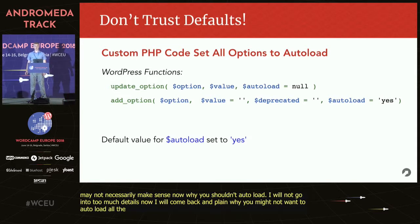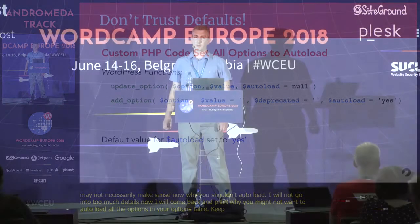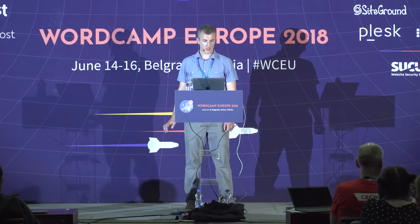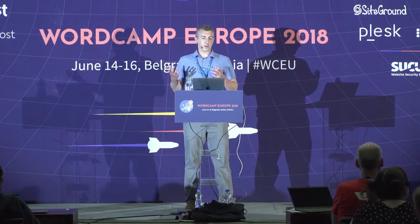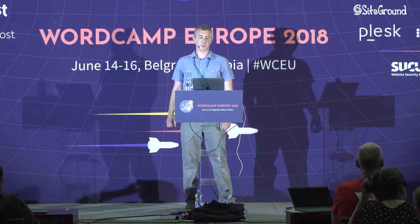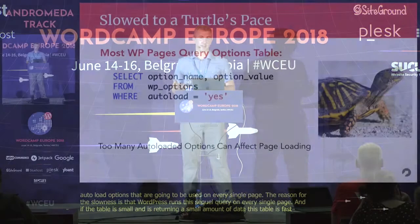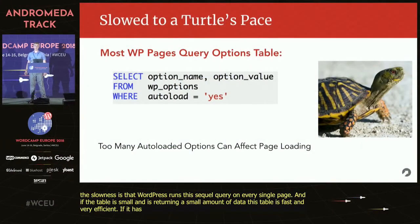Just keep in mind that you should only autoload options that are going to be used on every single page. The reason for the slowness is that WordPress runs this SQL query on every single page — it's looking for all the options where autoload is set to yes. If the table is small and returning a small amount of data, this is fast and very efficient. However, if it has a lot of data, this query can take a couple of seconds to execute and slow down each page load.